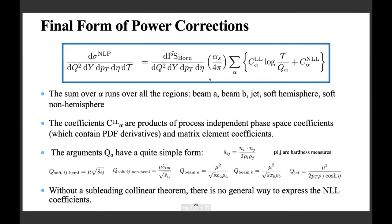The next-to-leading power contributions factor into: universal leading log coefficients C^{alpha}_{LL} multiplying log(tau/Q_alpha), where alpha runs over all regions — beam A, beam B, jet, soft hemisphere, and soft non-hemisphere — and process-dependent coefficients C^{alpha}_{NLL} for the next-to-leading log pieces, which require the full matrix element squared. The Q_alpha values depend on the region; notably for the jet region there is a dependence on cosh(eta), the hyperbolic cosine of the jet pseudorapidity. Without a sub-leading collinear theorem we cannot predict the NLL pieces in process-independent form.